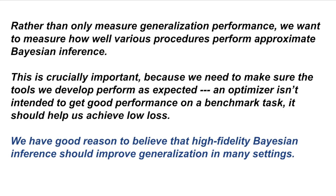This competition isn't only about measuring generalization performance — in fact it's focused on measuring how well various procedures perform approximate Bayesian inference. This is a subtle but crucially important distinction because we need to make sure that the tools we develop perform as they're intended to perform. For example, an optimizer isn't intended to get good performance on a particular benchmark task — it's intended to help us achieve low training loss, and if it can do that reliably well, then it should be useful in a variety of different applications.